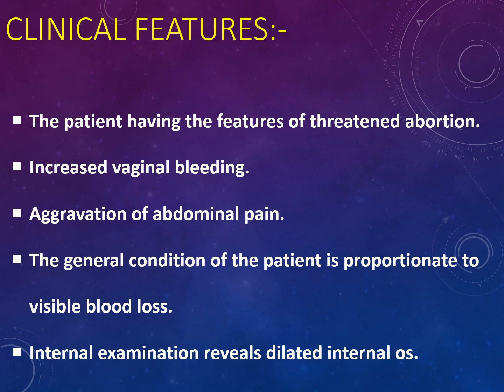The clinical features of inevitable abortion are similar to threatened abortion but more severe. The vaginal bleeding will be more profuse, and the pain will also be more severe. The general condition of the patient is proportionate to the visible blood loss — the more blood loss, the worse the condition. On internal or pervaginal examination, you may find that the os has started to dilate.